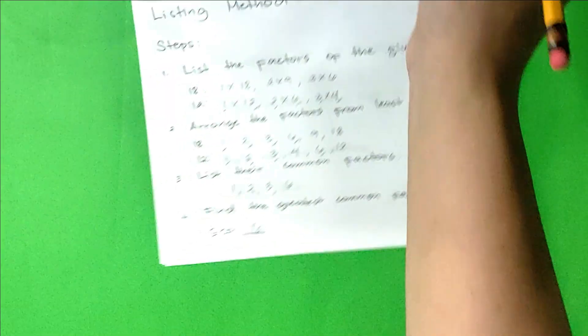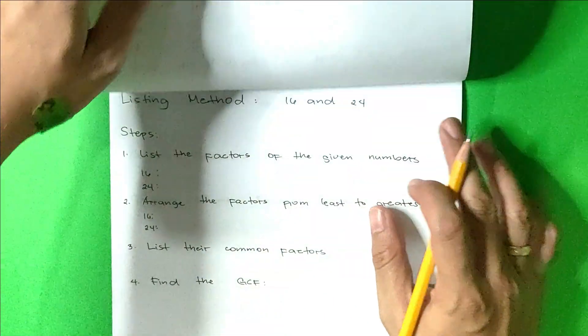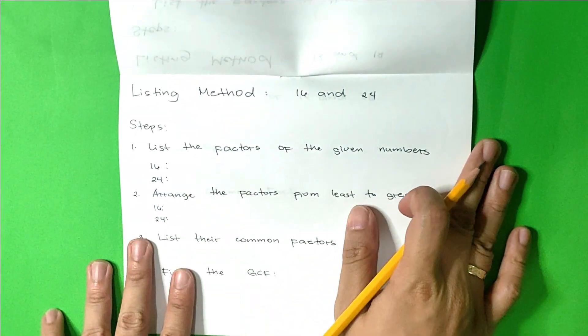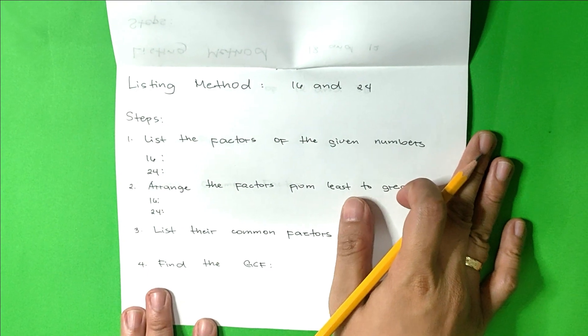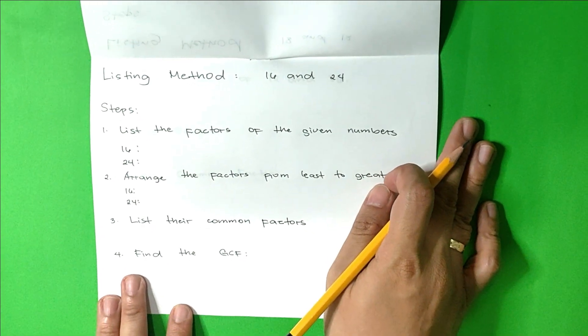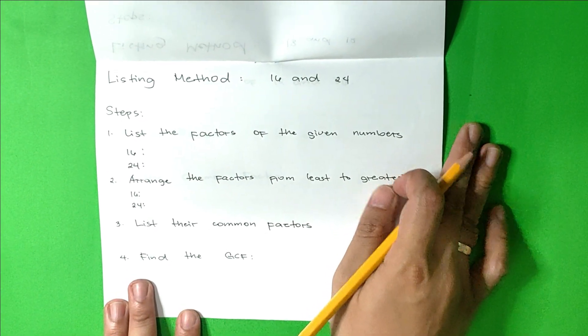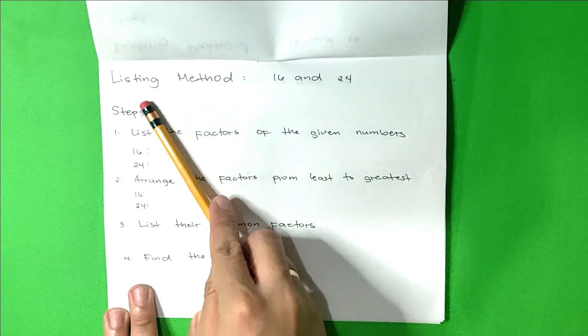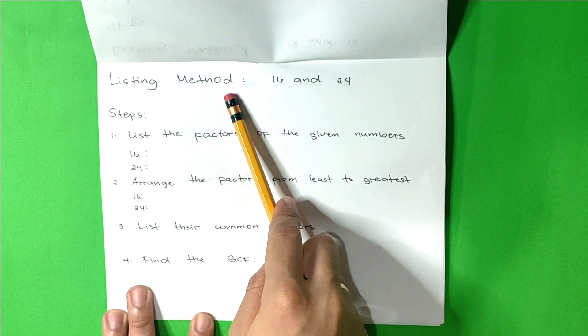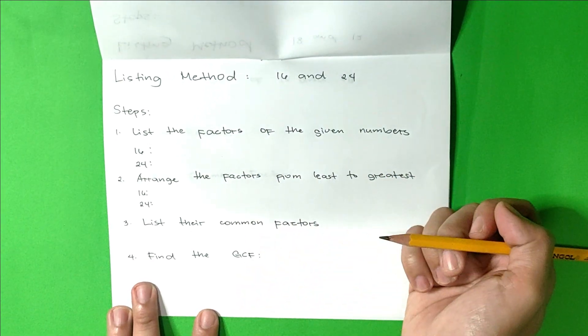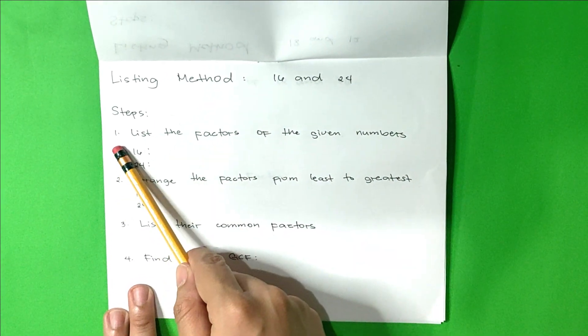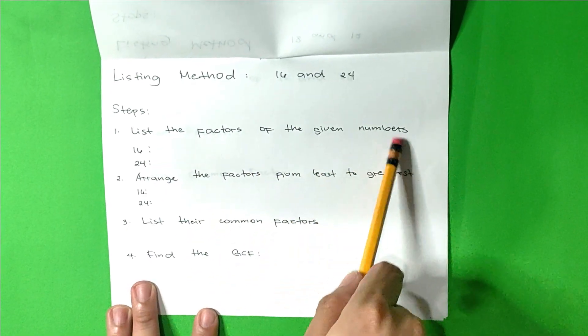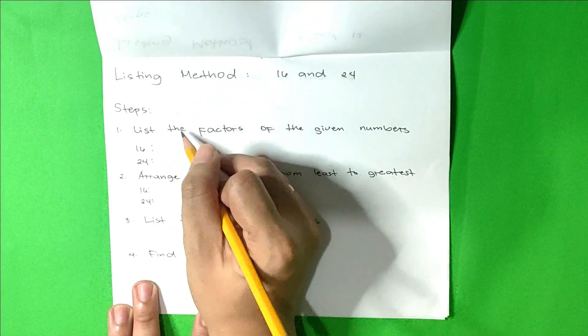Let us have another example. Find the common factors and the greatest common factor of 16 and 24 using listing method. Follow the steps. Step 1: List the factors of the given numbers. Let's start with 16.